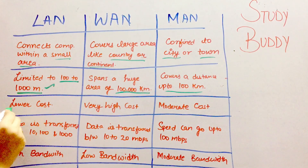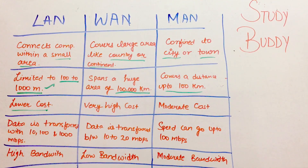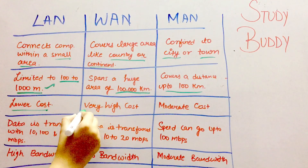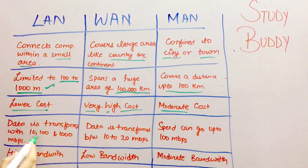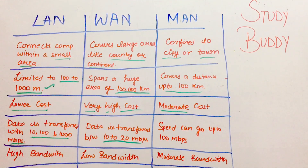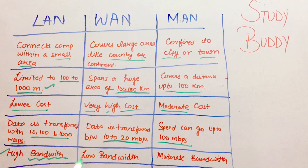In terms of cost, LAN has a low cost because it only covers a small area with few computers and cables. WAN has a very high cost because it has connectivity across a whole country. MAN has a moderate cost. For data transfer speed: LAN supports 10, 100, and 1000 Mbps; WAN is up to 10 to 20 Mbps; and MAN can go up to 100 Mbps. For bandwidth, it is high for LAN, low for WAN, and moderate for MAN.